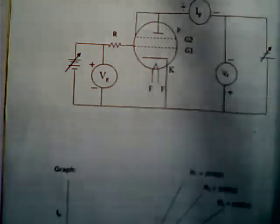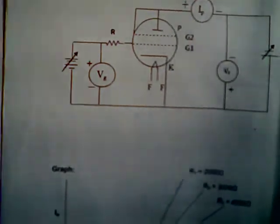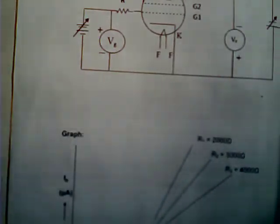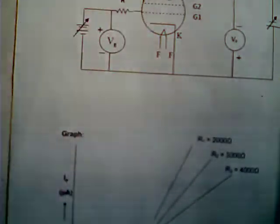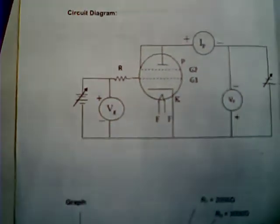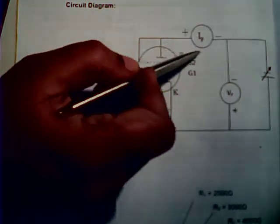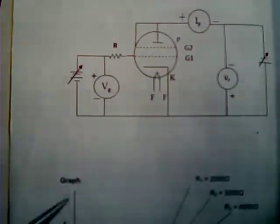Now if you look at this graph, what we have done is plotted the plate current, which is measured here. You can see that part. The plate current measured using this apparatus is taken along the y-axis.